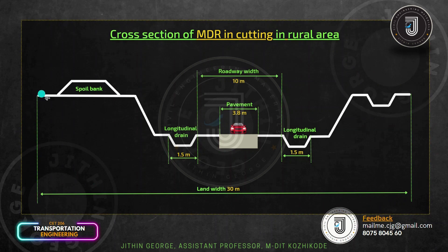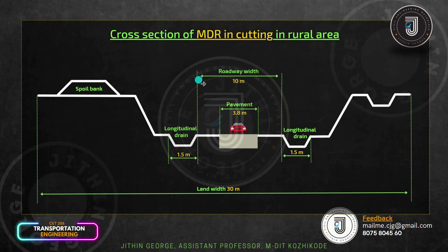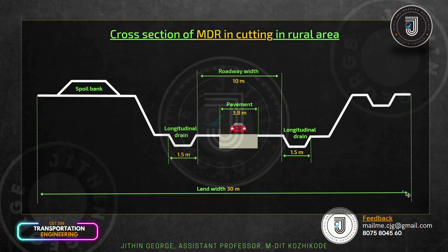This figure shows the portion of the area which is cut. This is a hill, with a single lane road which is about 3.75 meters, around 3.8 meters. This roadway is 10 meters, which is located in a major district road. We have longitudinal drains, which is about 1.5 meters. Land width is about 30 meters, and the roadway is about 10 meters.